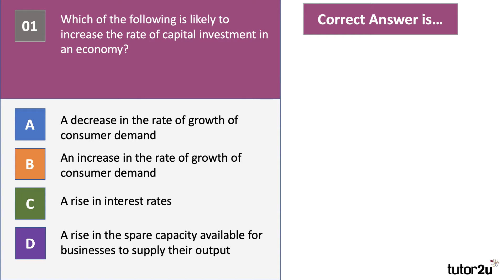The correct answer here is B — an increase in the rate of growth of consumer demand. This is also known as the accelerator effect. For example, as the demand for 4G and 5G services goes up, so too does the need for increased investment to increase the capacity of the telecom sector. So there's a positive accelerator effect.